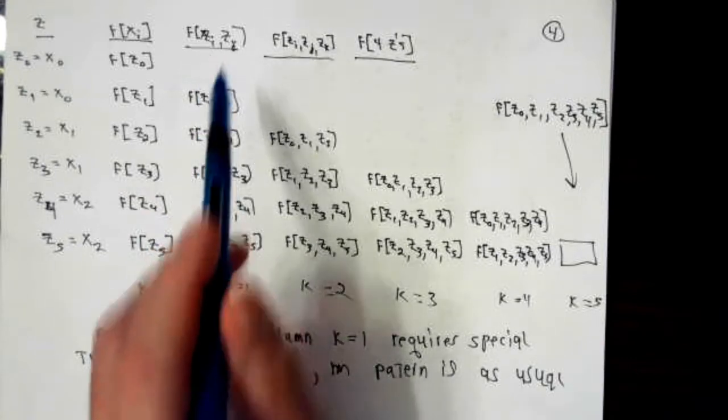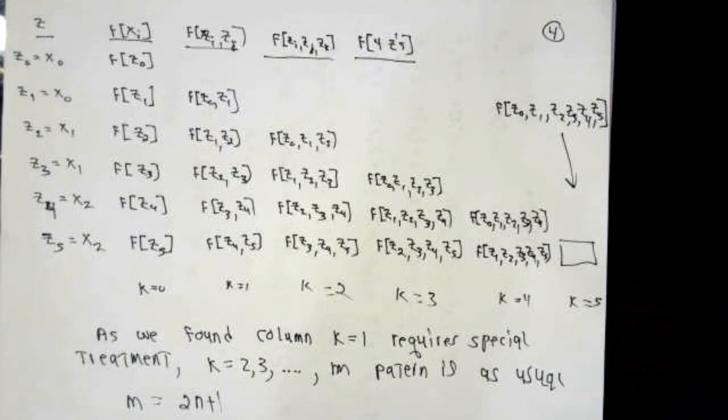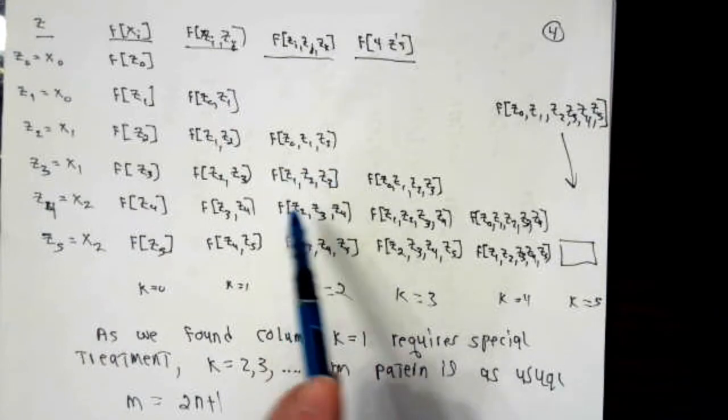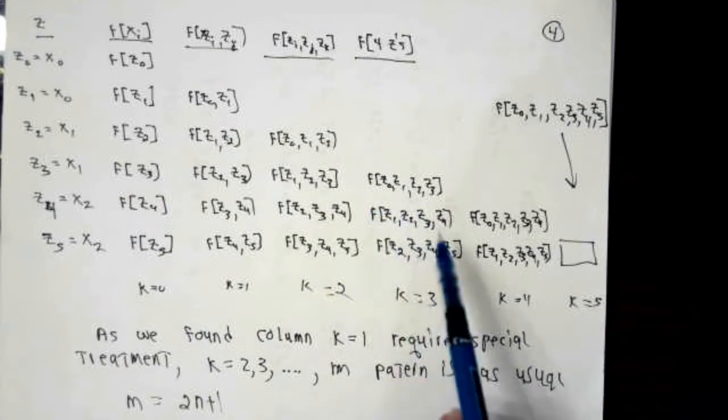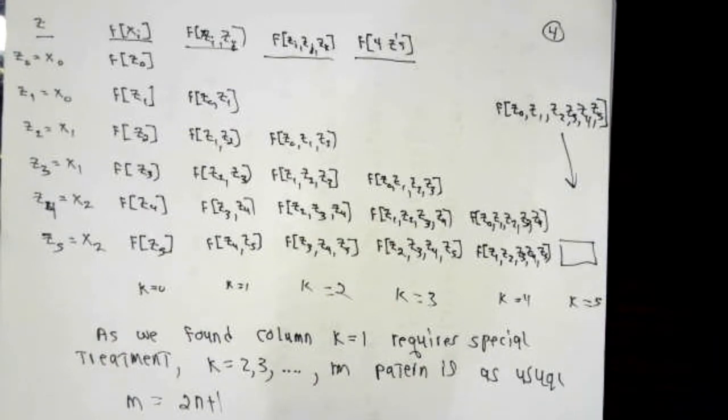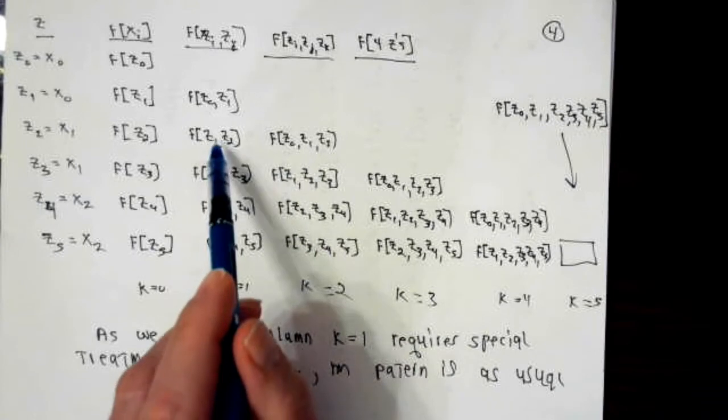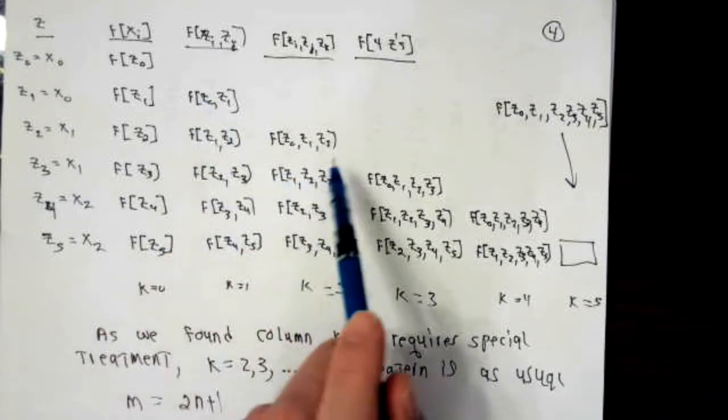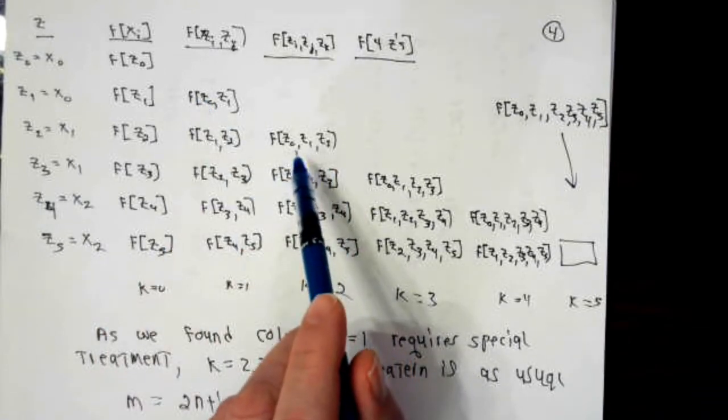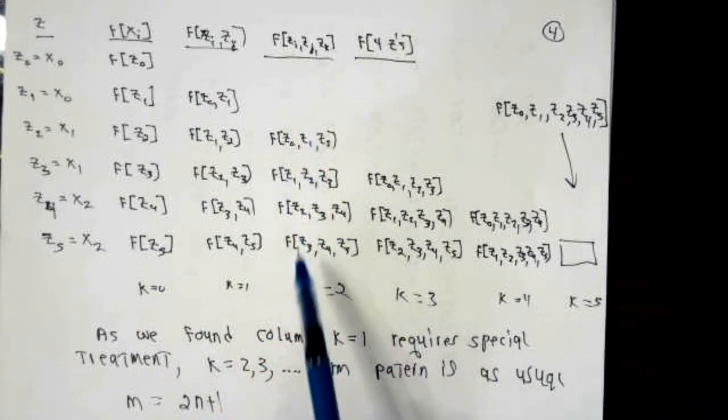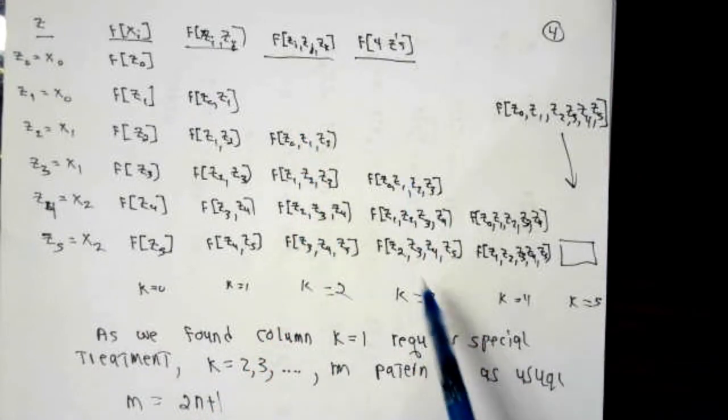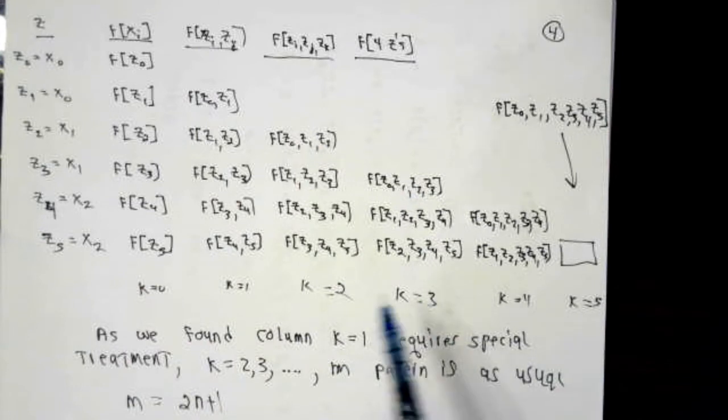Once we've gotten column k equal 1 established, then the z numbers that appear on the bottom of the fraction have indexes that differ by more than 1, and therefore we're never going to get division by 0. When we took the limit, for instance, we found out that to get this number, it's this number minus that number, divided by z2 minus z0. And likewise, for the rest of the column, we calculate this column using the same recursive formula.